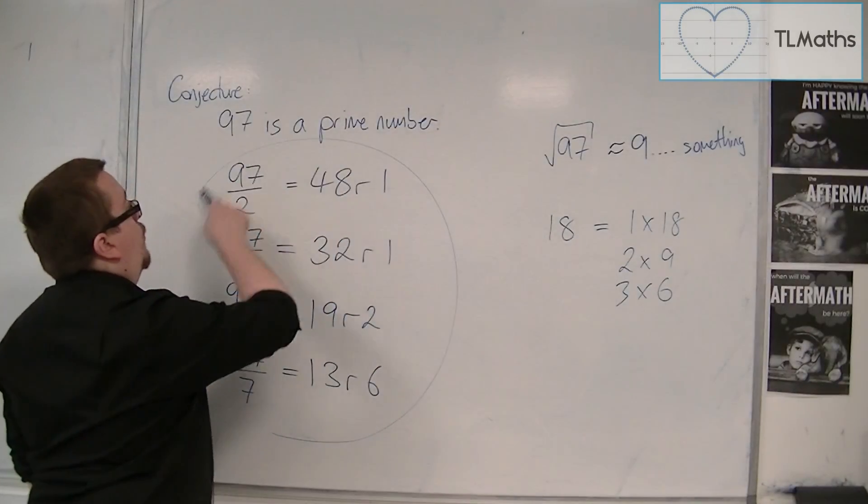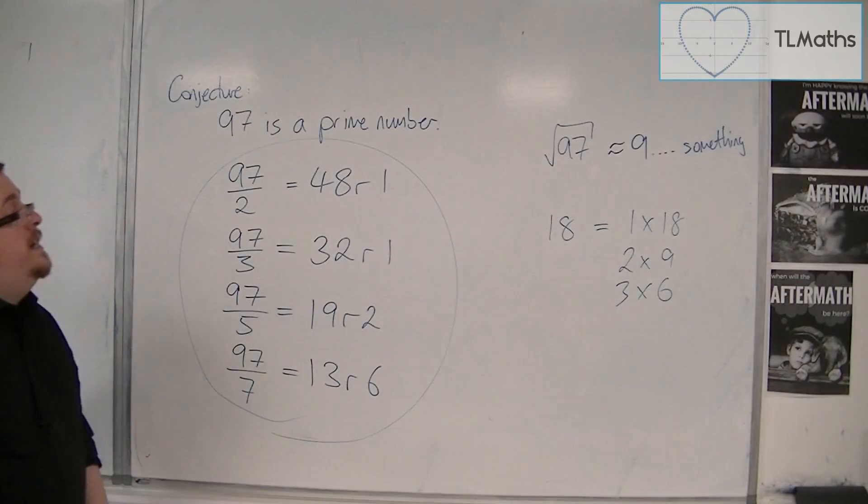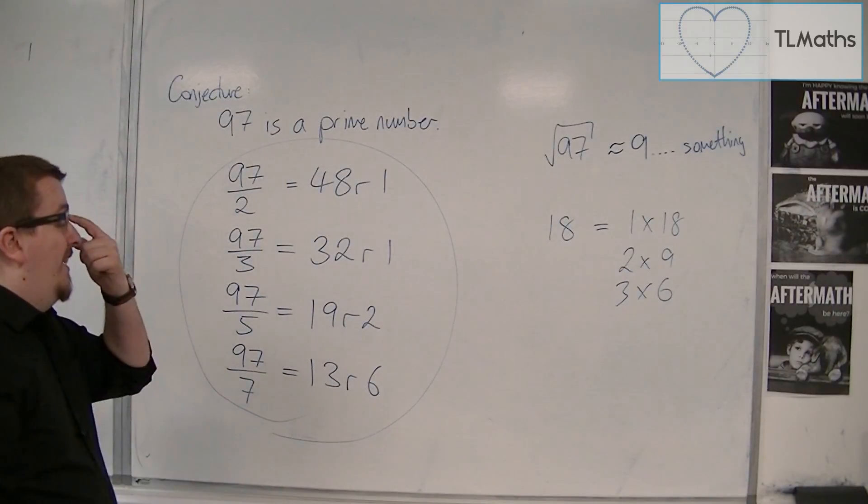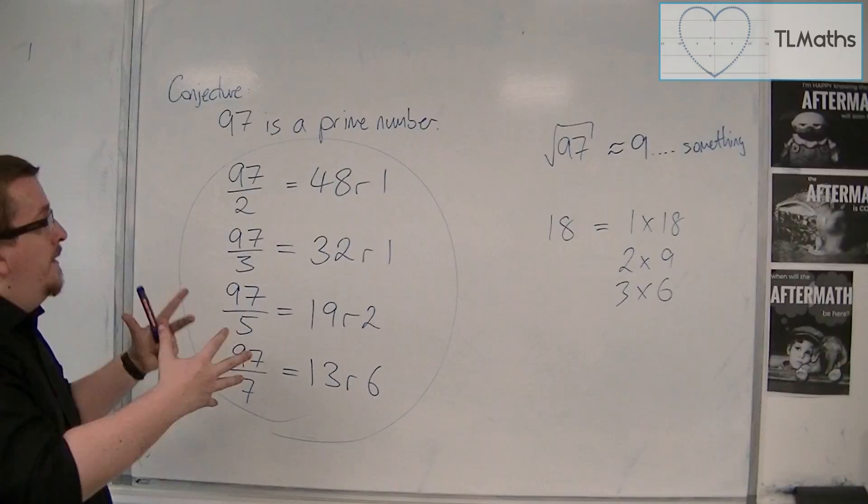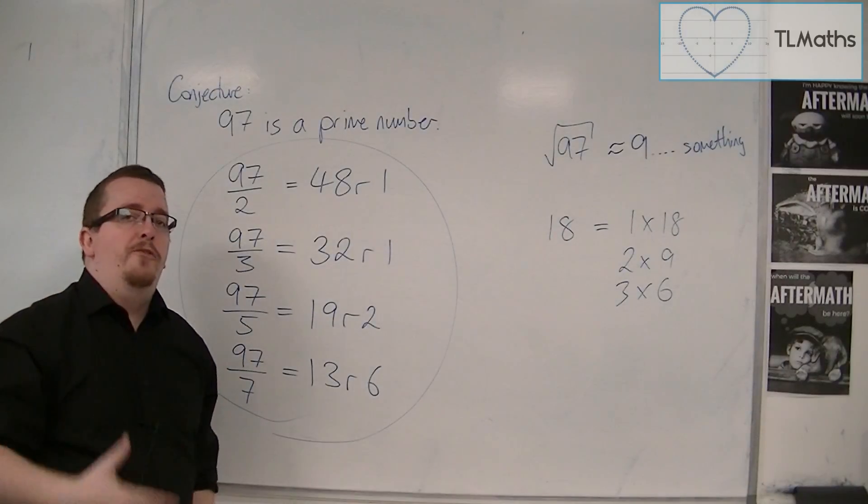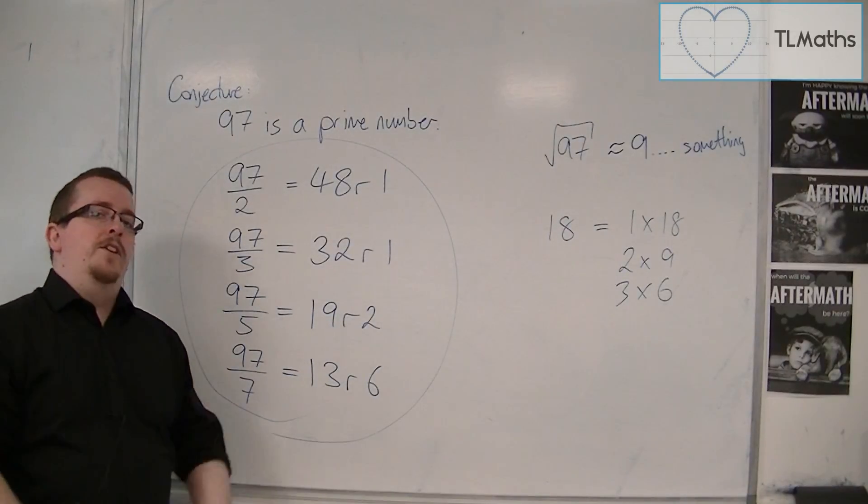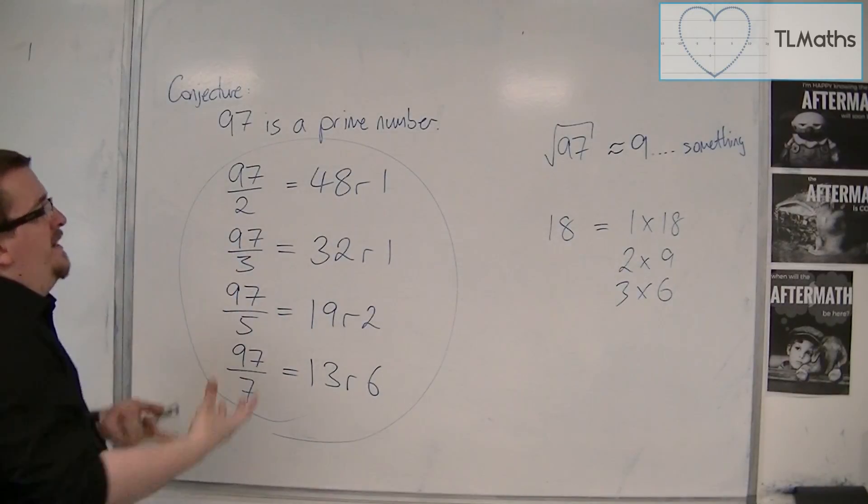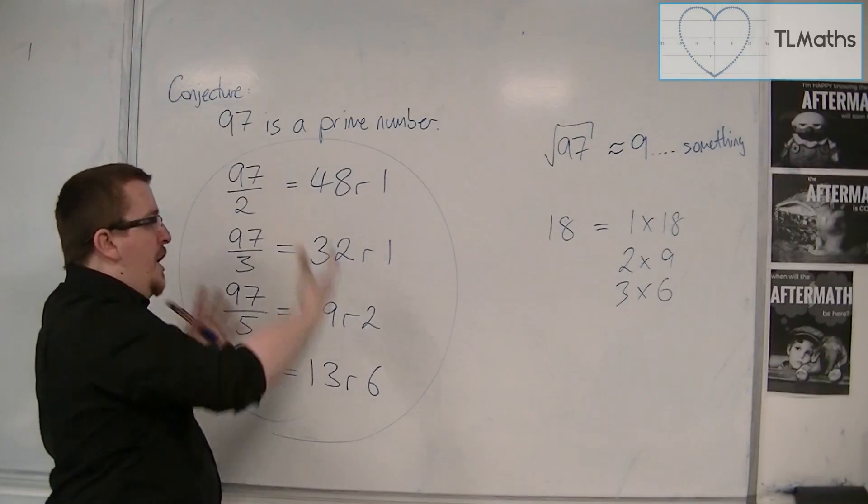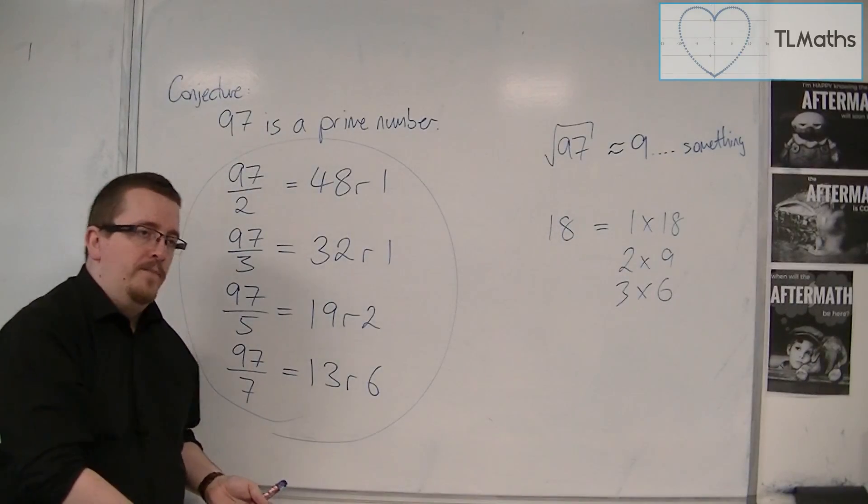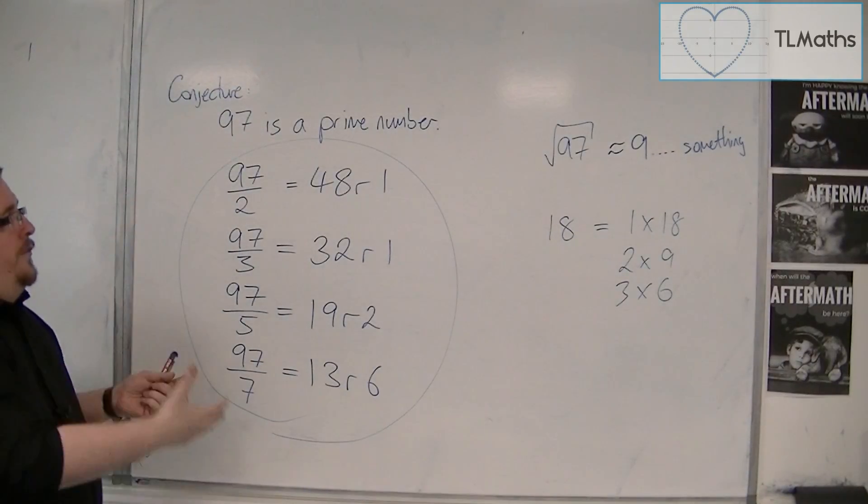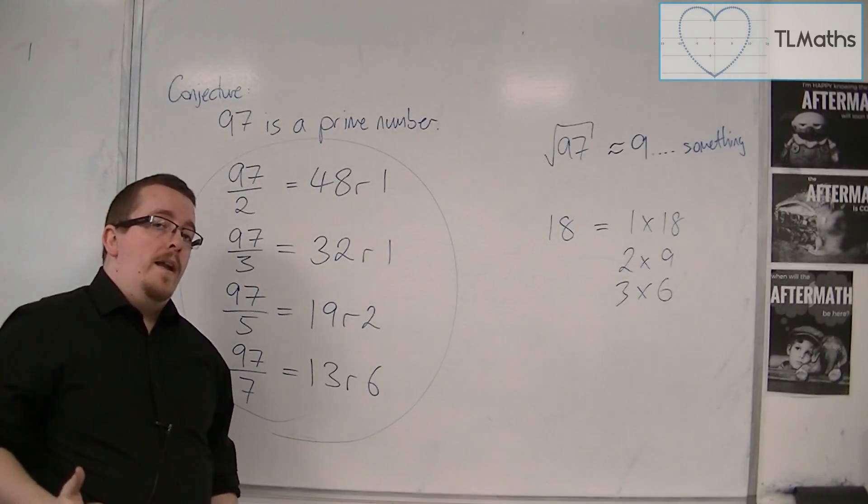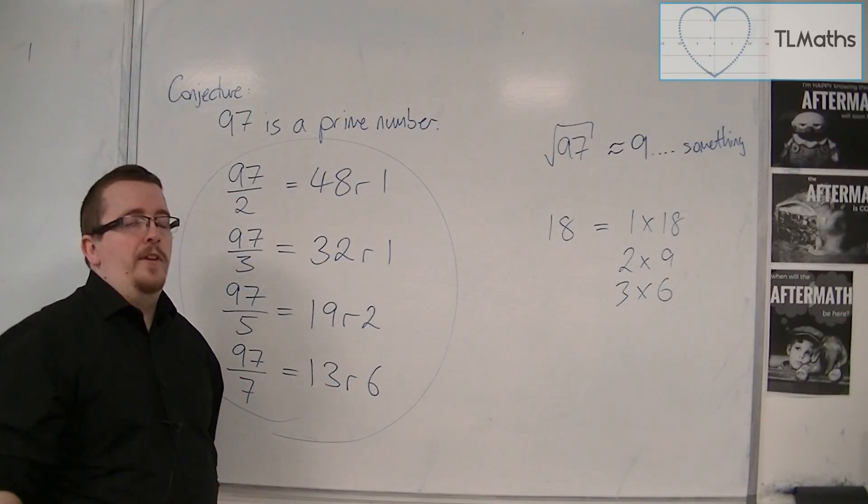So essentially, all I needed to do was go through these three to show that 97 is a prime number. Now, that is an example of proof by exhaustion because I have tried all of the different possible ways of dividing 97 by a number, and none of them worked. So that means that 97 has precisely two factors, only one and itself, and hence it is prime.